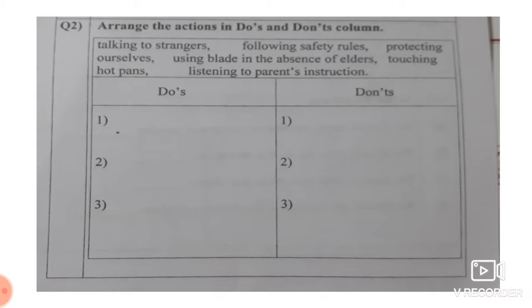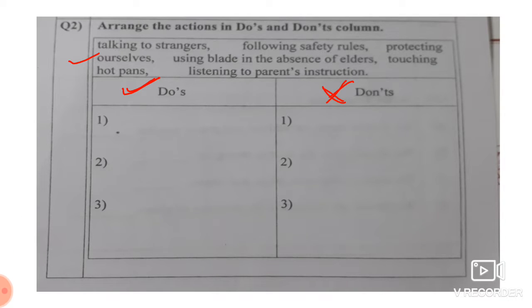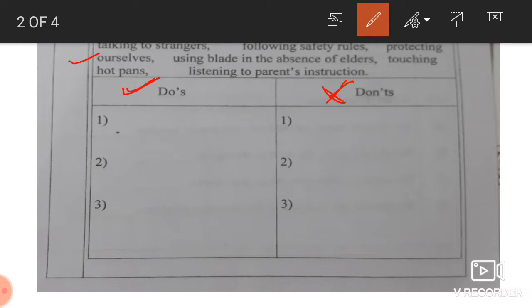Now, question number 2. Arrange the actions in do's and don'ts column. Now, talking to stranger. Do's means what and don'ts means what. Let me explain it. Do's means which you can do, and don'ts means which you should not do. Here are the few things which are given over here. The rules are given, and some rules we should follow, some rules we should not do. So the rules we should follow, we will put it in do's column. Which we should not do, we will put in the don'ts column. First, let me read. Number 1, talking to the stranger. Yes, tell me. Talking to the stranger, do's or don'ts? I know you will tell me. No, don'ts.